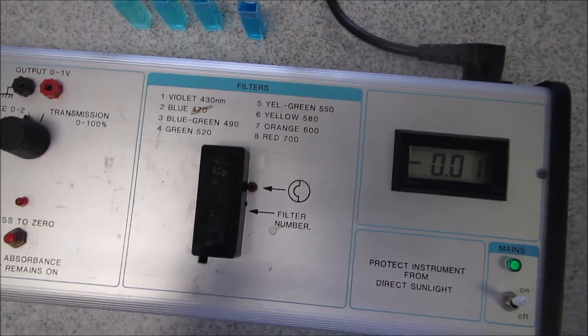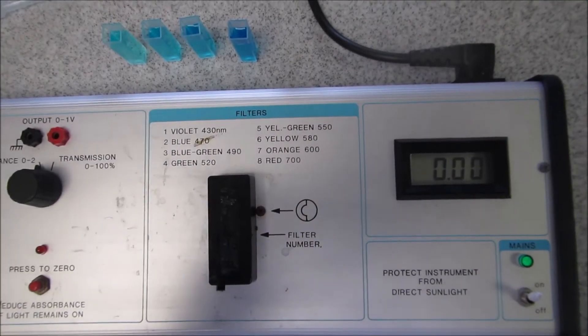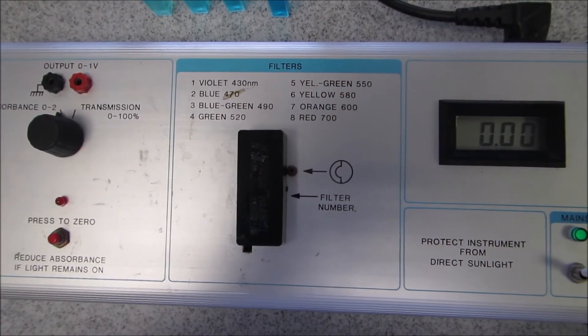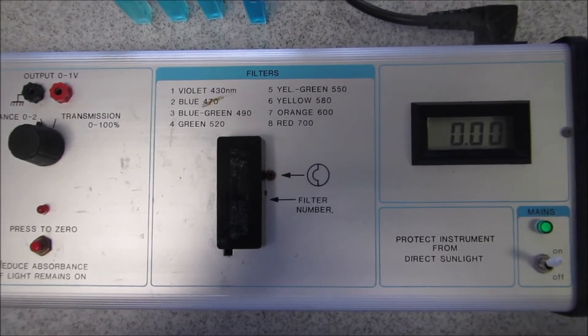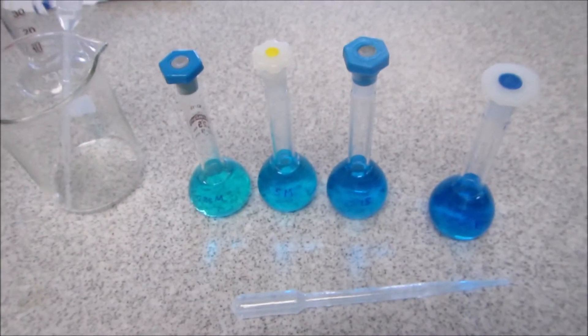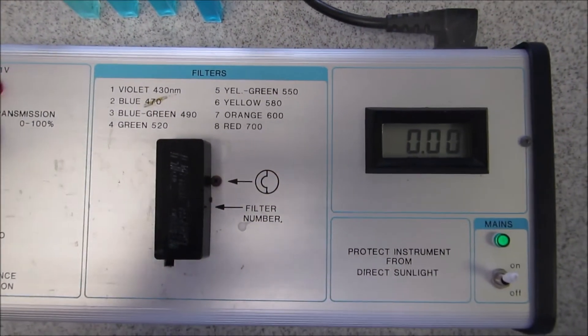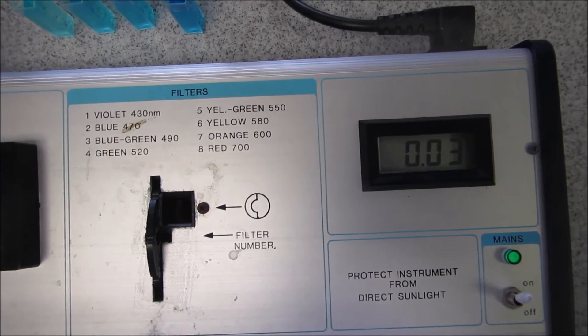I'm just going to put back in my blank and check it's still at zero. That is the first part where you've worked out where the maximum absorbance is. The next part you have to do is work out what the absorbance is for all the different concentrations and use this to produce what's called a standard curve. From the standard curve you can then use it to estimate the concentration of copper in an unknown.